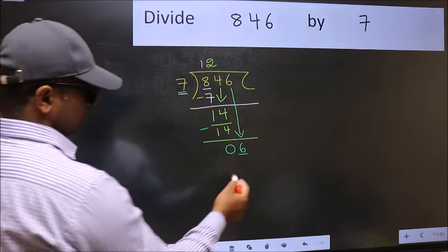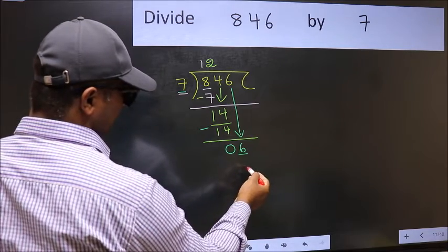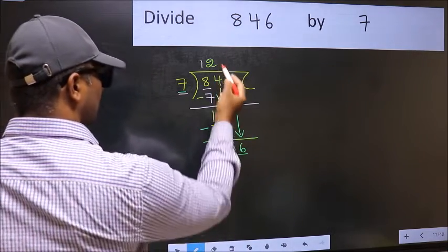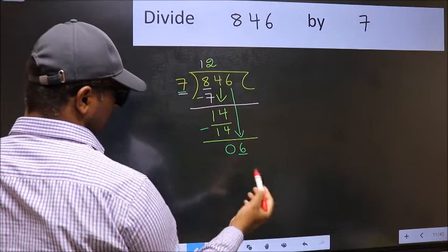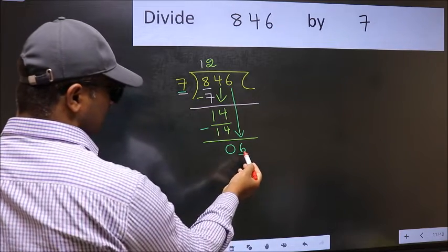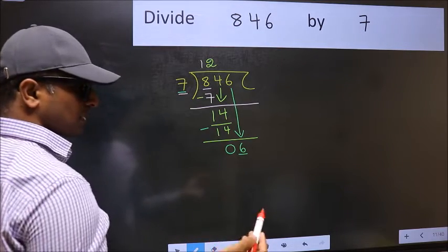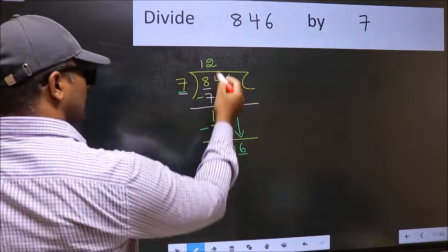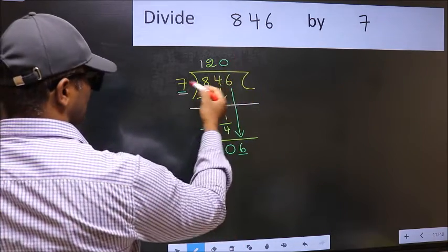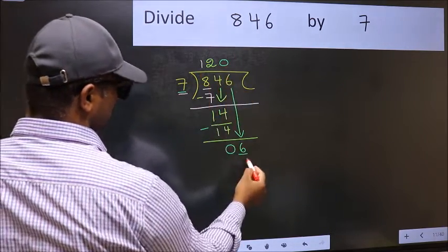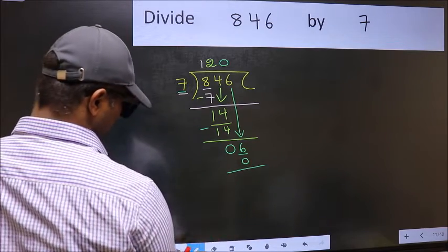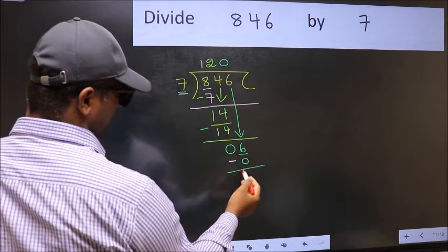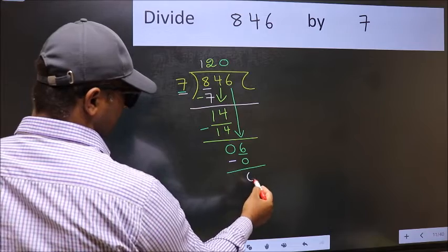Instead, what you should think of doing is, which number should we take here? If I take 1, we will get 7. But 7 is larger than 6. So what we should do is, we should take 0. So 7 into 0, 0. Now you should subtract. 6 minus 0, 6.